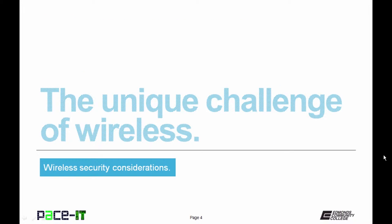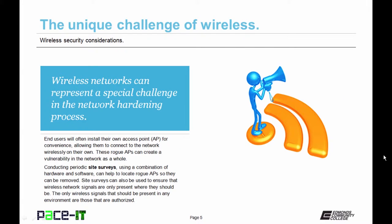Wireless networks can represent a special challenge in the network hardening process. One of the main tenets of network security is hiding your traffic. With wireless, it's impossible to hide your traffic because it flows over the airwaves, so with the proper equipment, anybody can see that traffic flowing on a wireless network. End users will often install their own access points for convenience, and these rogue access points can create a vulnerability in the network as a whole.